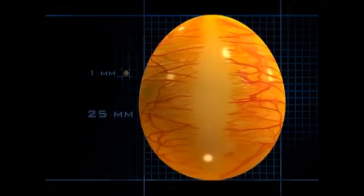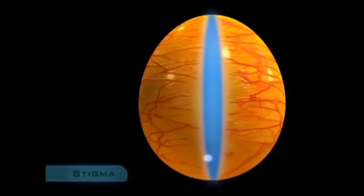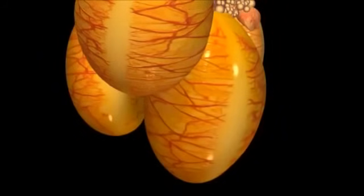When a yolk matures, the follicle ruptures along a line relatively free from blood vessels, the stigma, and the yolk is released.